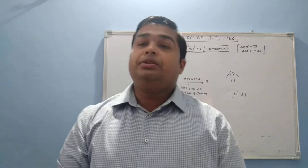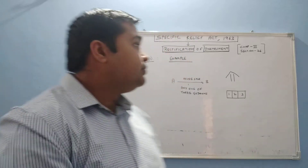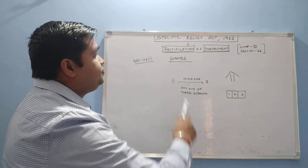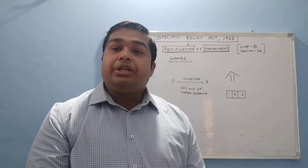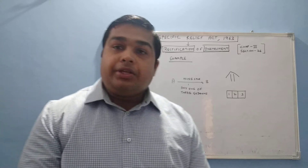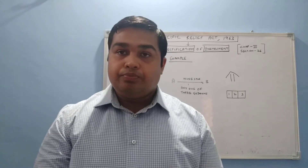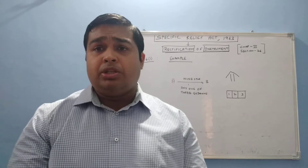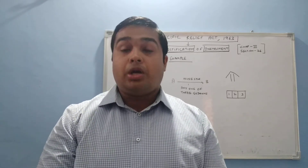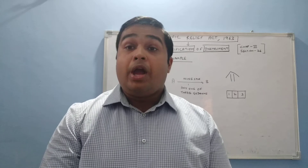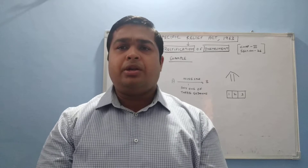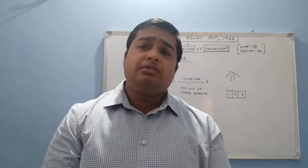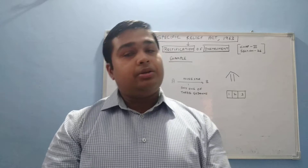Hello students. We were doing Section 26 sub-clause 1. Section 26 sub-clause 1 talks about when you can file a rectification of the instrument case. When you have a document that does not show your real intention, and due to fraud or mutual mistake of parties, if the real intention is not shown, then any party can file a case for rectification of the instrument by the court.